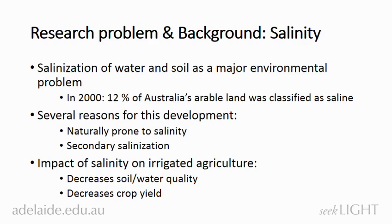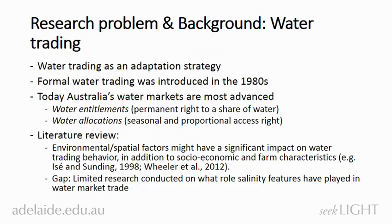The impact of high salinity levels on irrigated agriculture can be very severe. It could mean that crop yields are declining due to a decline of water quality and soil quality. Infrastructure is impaired and overall agricultural production can decline. Over the past few decades, farmers in the Murray-Darling Basin had to adapt to various changes in the environment, and it was found that water trading is now widely adopted by irrigators to adapt to a changing environment, as water trading helps to increase farmers' flexibility to water use.